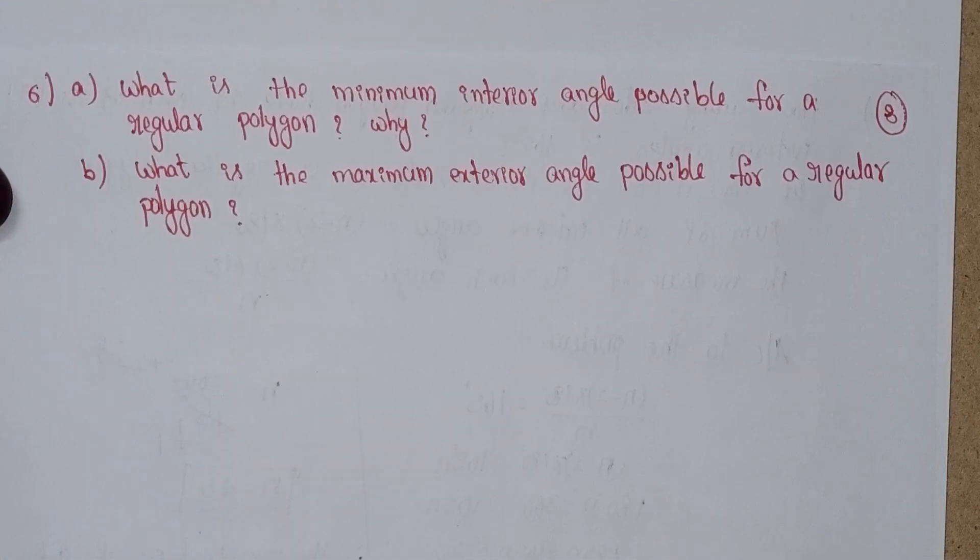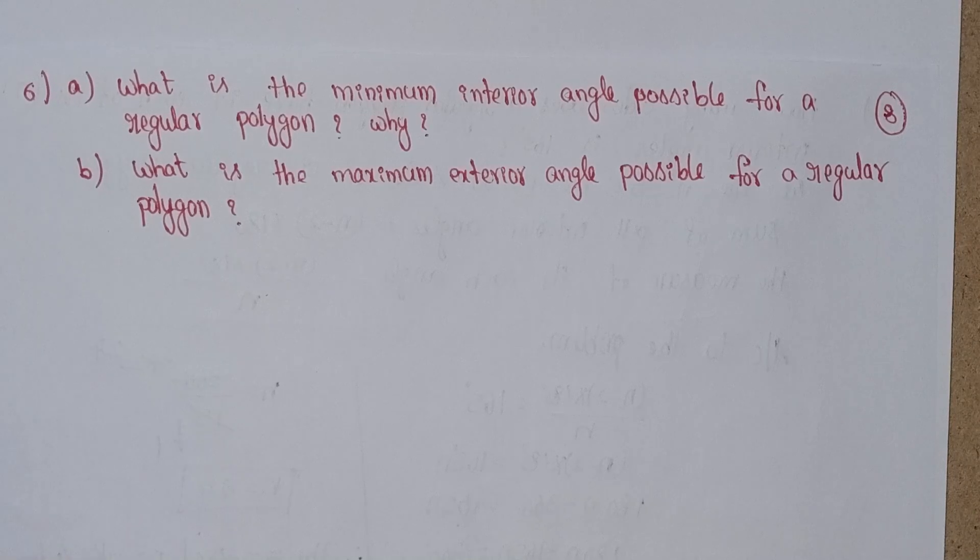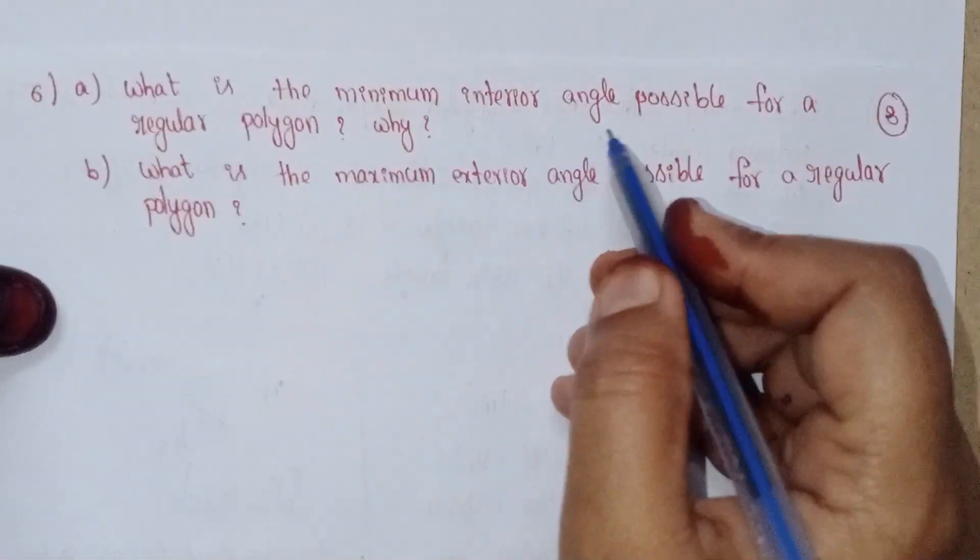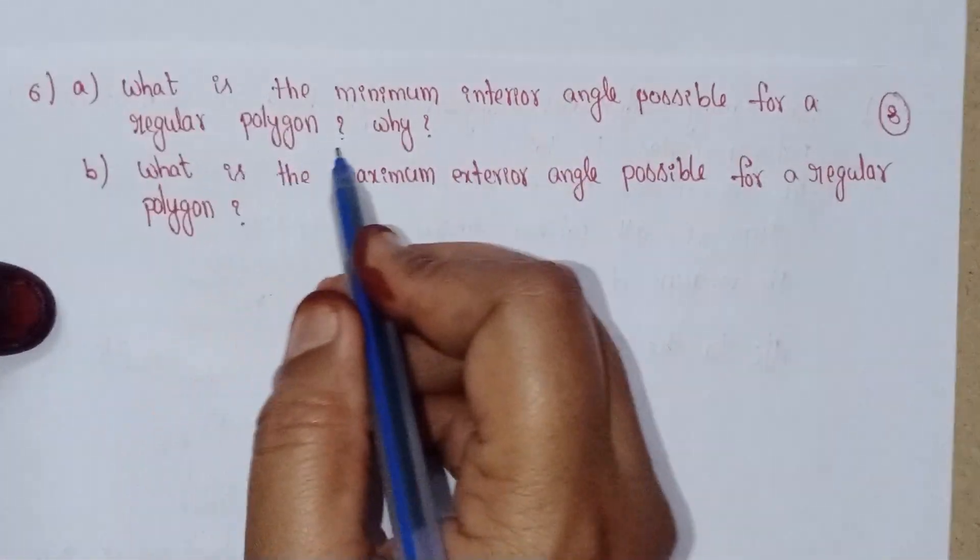Welcome back to Learn Something More YouTube channel. Today we will discuss Andhra Pradesh State 8th class mathematics chapter number 3, Understanding Quadrilaterals, Exercise 3.2, problem 6. What is the minimum interior angle possible for a regular polygon? Why?